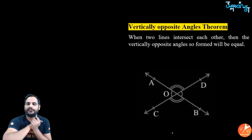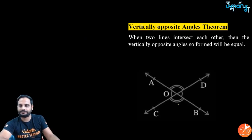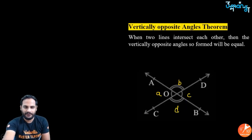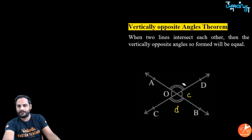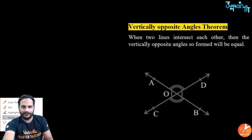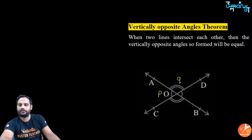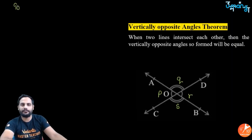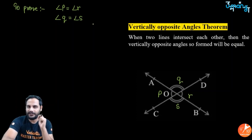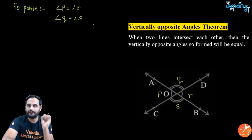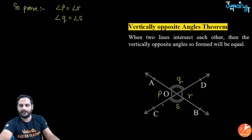Now let's prove the vertically opposite angles theorem. Let the four angles formed be P, Q, R, S. We need to prove angle P = angle R and angle Q = angle S. In geometry it is important to write the reason for each statement. Since CD is a straight line and OA is a ray on it, angles P and Q form a linear pair, so angle P + angle Q = 180° (reason: linear pair).